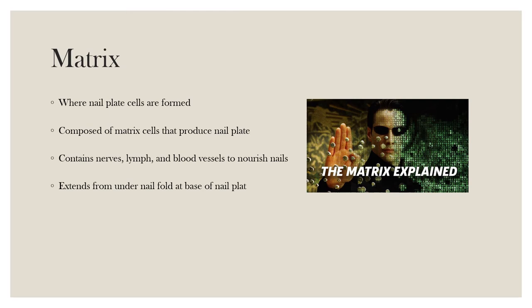The matrix is the area where the nail plate cells are formed. It is composed of matrix cells that produce the nail plate cells. The matrix area contains nerves, lymph, and blood vessels to nourish the matrix cells. As long as it is nourished and healthy, the matrix will continue to create new nail plate cells. The matrix extends from under the nail fold at the base of the nail plate.